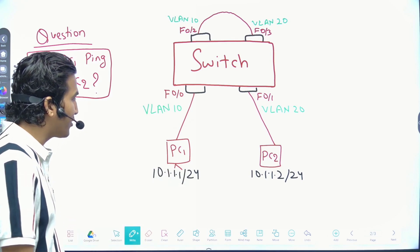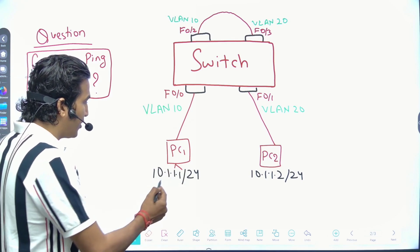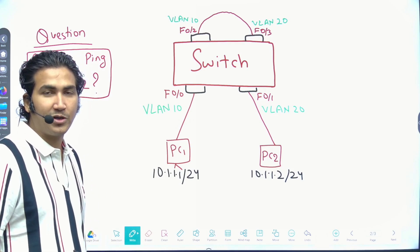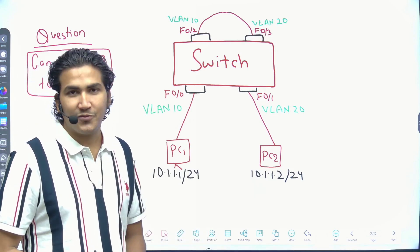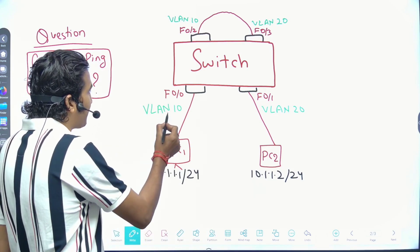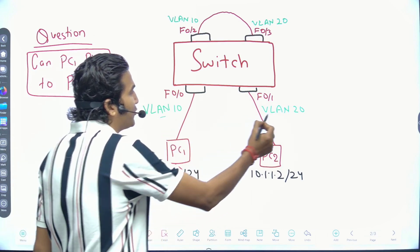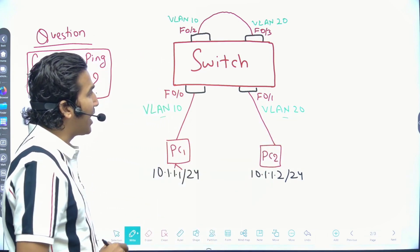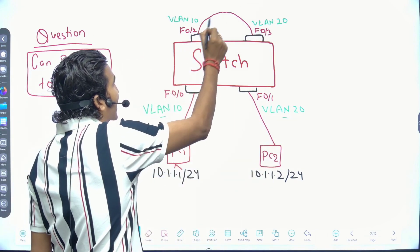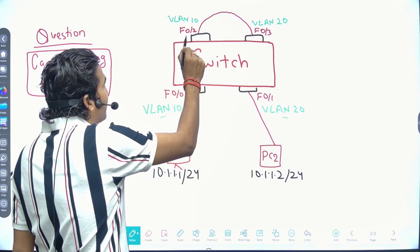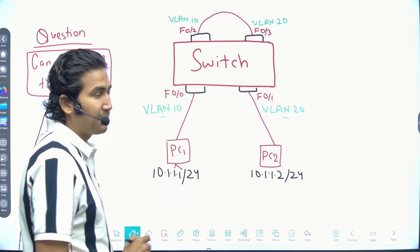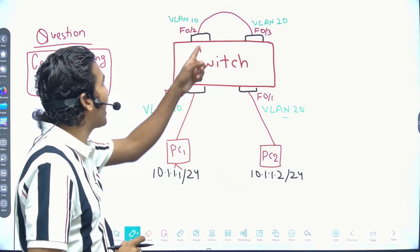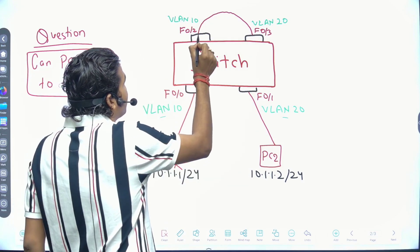PC1 has IP 10.1.1.1/24 and PC2 has IP 10.1.1.2/24. PC1 is part of VLAN 10 and PC2 is part of VLAN 20. I have connected one direct Ethernet cable between port 0/2 and port 0/3.